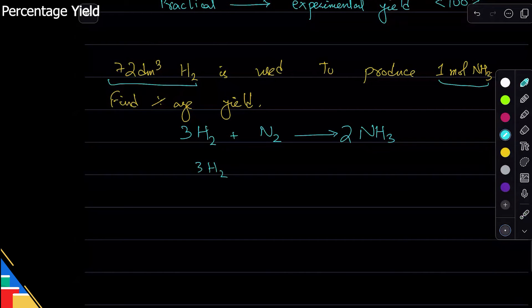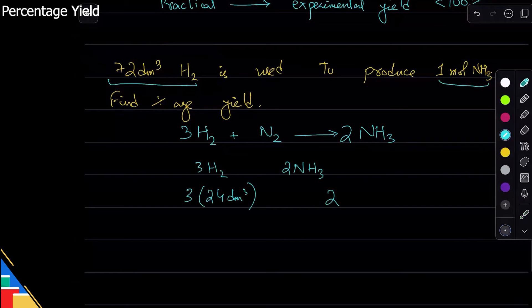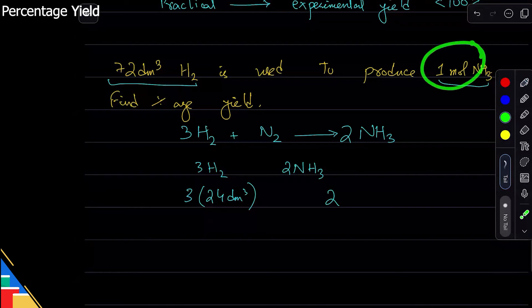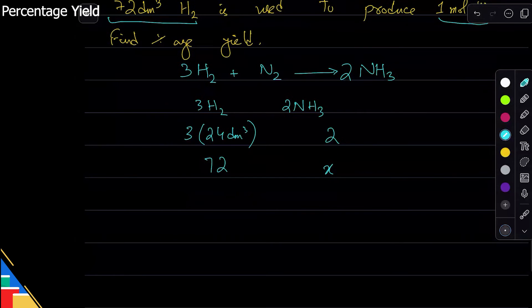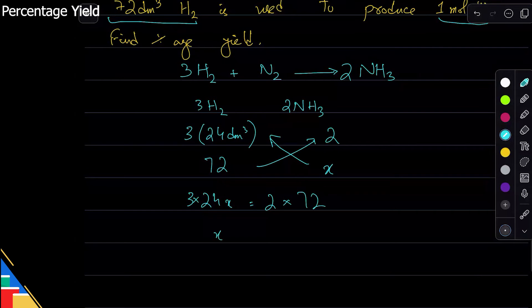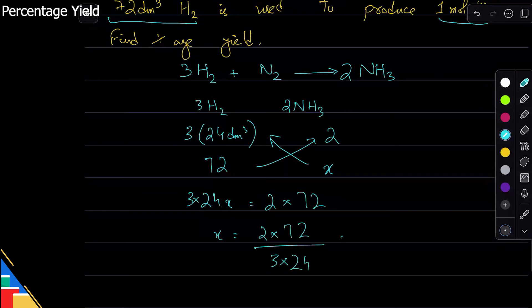Okay, so I'm going to do it. I have three H₂. I'm going to use the ratio method, but of course you're free to do any other method. So three times 24 dm³, because one mole is 24 dm³, produces simply two moles, because one mole is simply one mole. They're asking us for moles, so it produces two moles ammonia. I have 72 dm³, so that should produce x. Let me cross multiply here. Three times 24 times x equals two times 72. X comes out to be two times 72 over three times 24, which is actually just two.